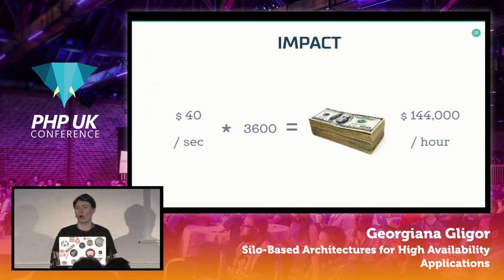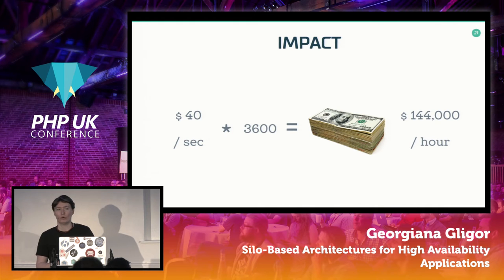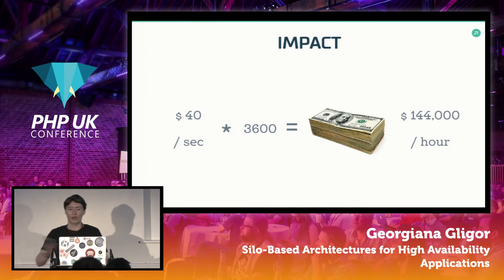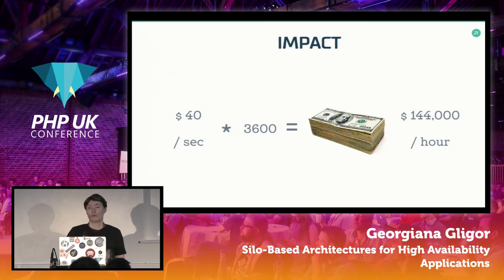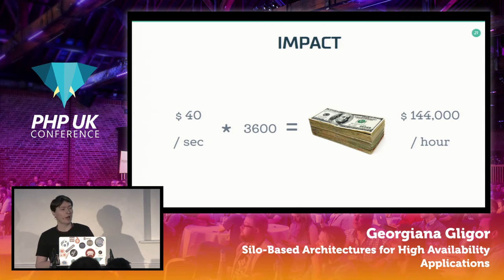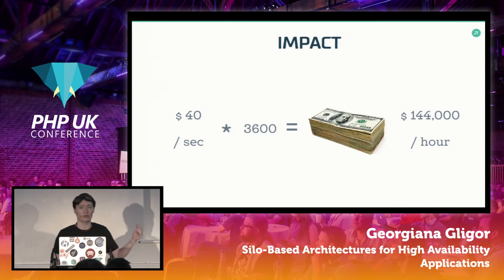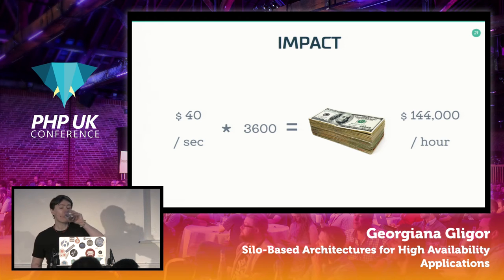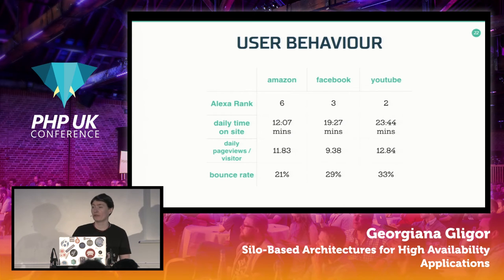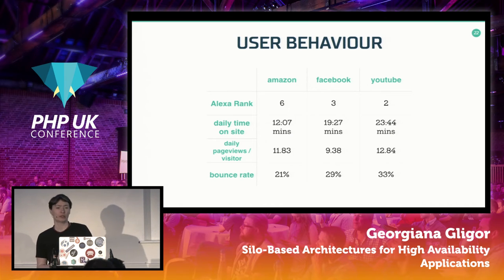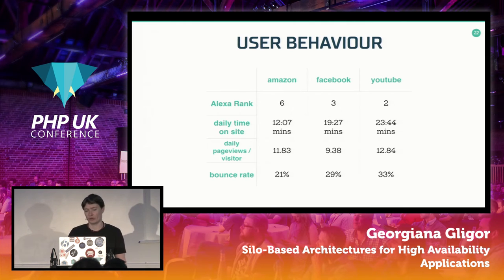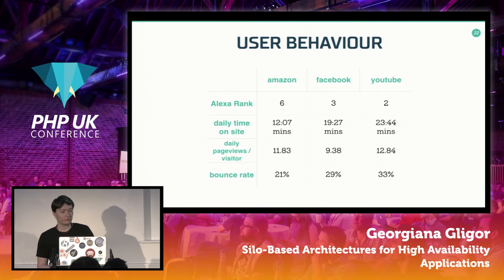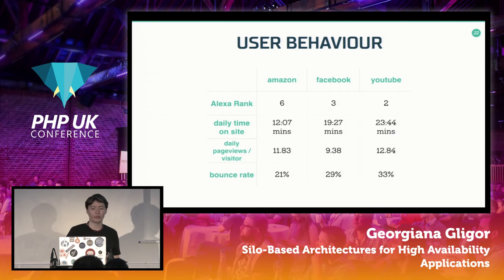I measured the impact for our US customer, an ultra-low-cost airline. Taking the entire money coming into the system in one year, they make on average $40 a second. For them, one hour of downtime meant a lot of money — about the average salary of a developer in the States. Another thing I always look at is user behavior: what is the application actually doing? I picked some of the most well-known websites to look at numbers, particularly Amazon's shopping part.